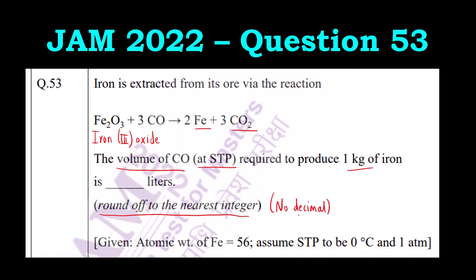STP conditions: the temperature is 0 degree Celsius and pressure is 1 atmosphere. Even if you don't know, they have provided the temperature and pressure at STP. They have also given that the atomic weight of iron is 56. How to approach this physical chemistry type of question?